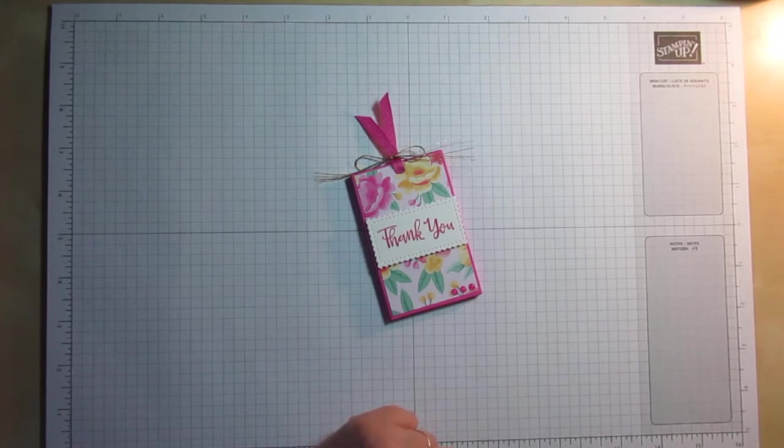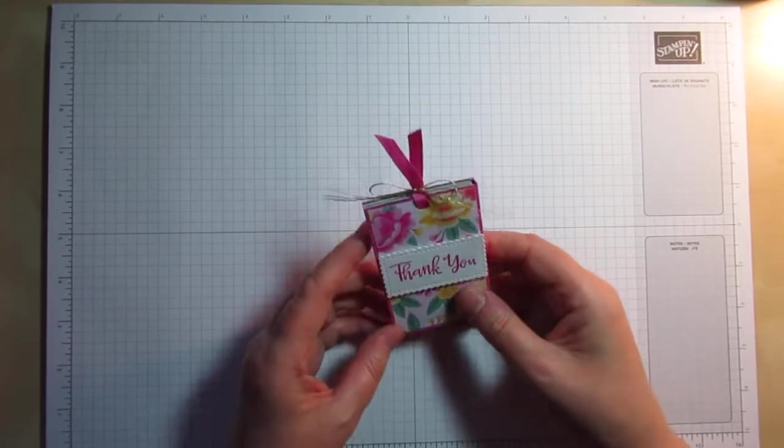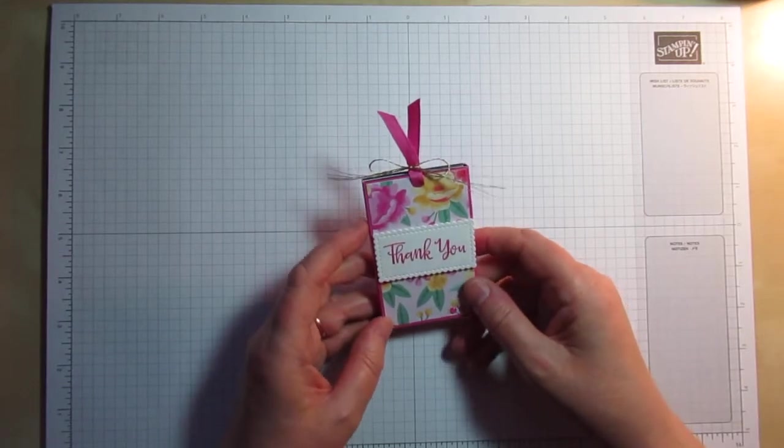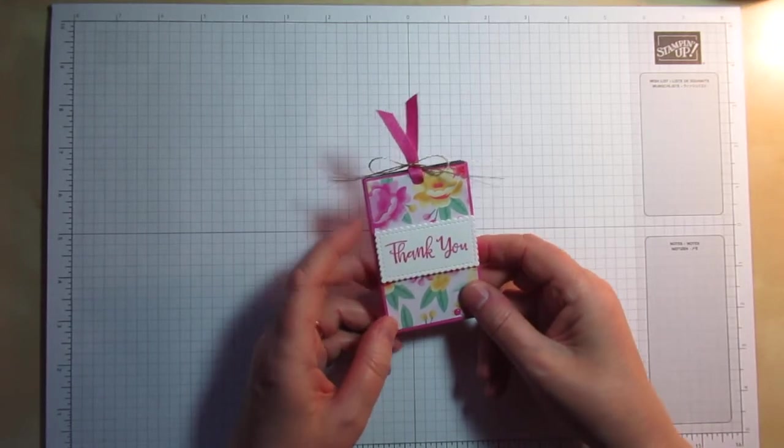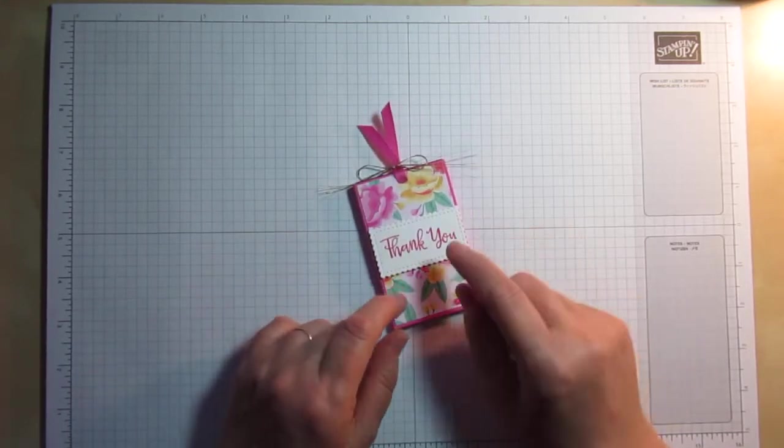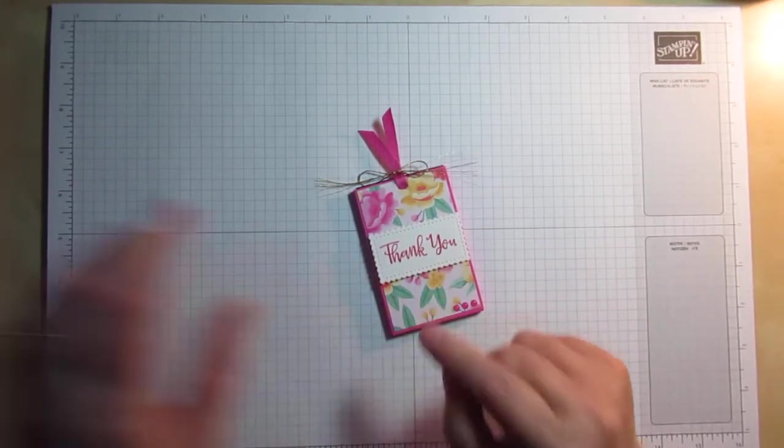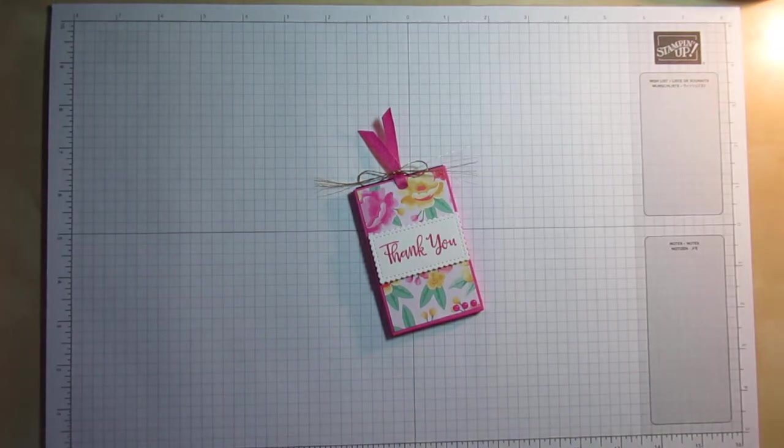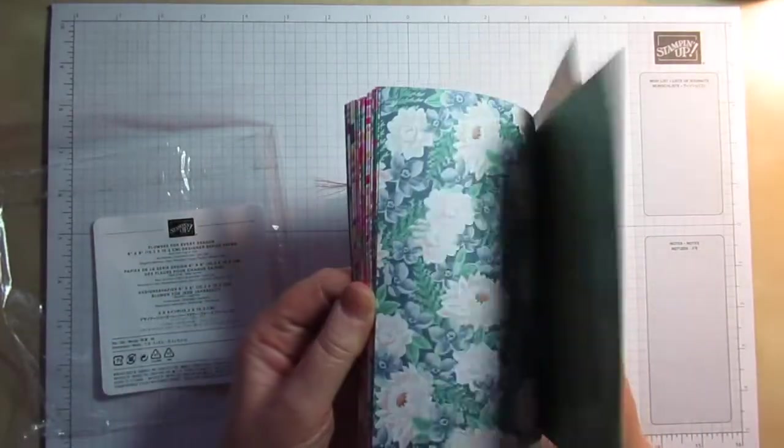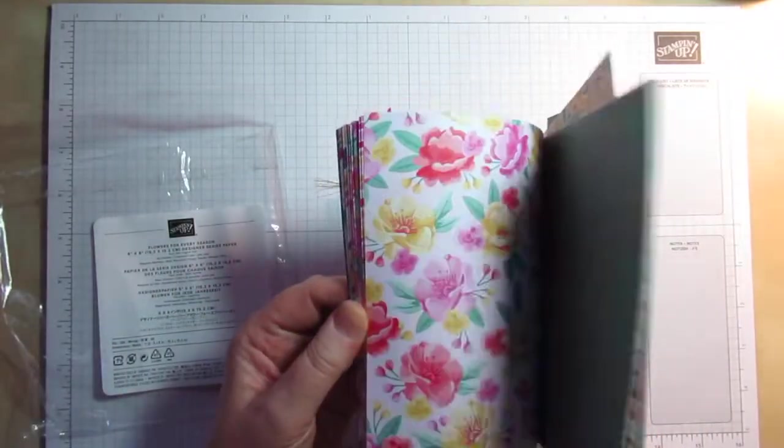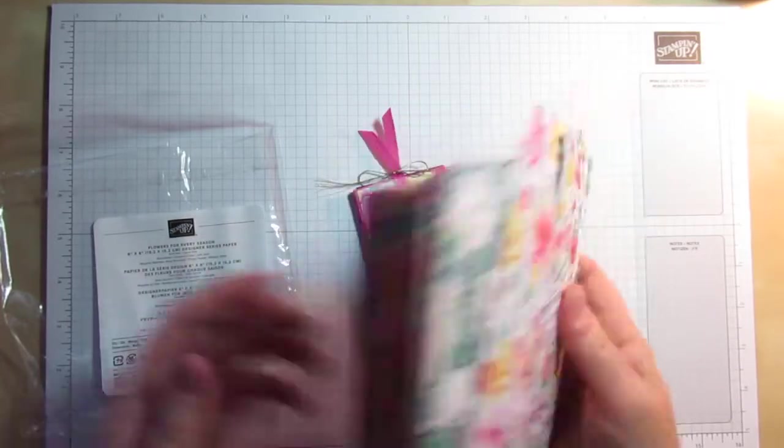So we're back to Magenta Madness, I'm afraid folks, like I warned you about a few videos ago, one of our new in colours that's 2020-22 in colours. And I've used a piece of designer series paper from the Flowers for Every Season paper stack. It's a 48 sheet pack with 6x6 sheets in it.